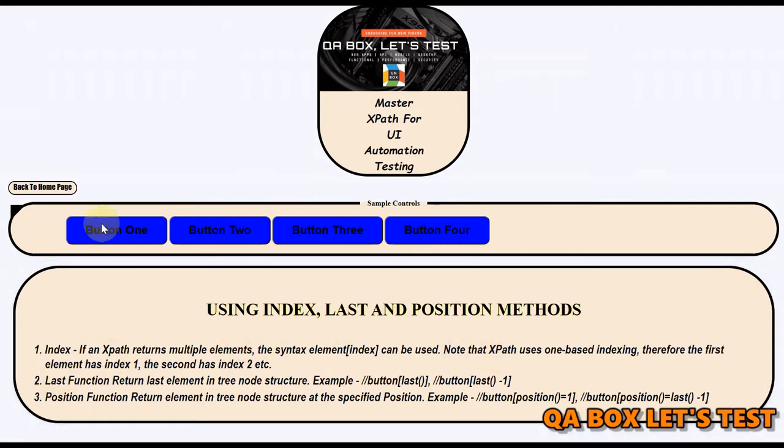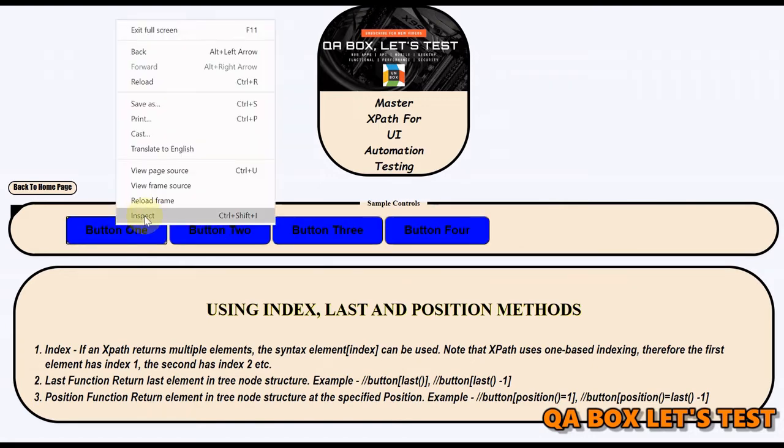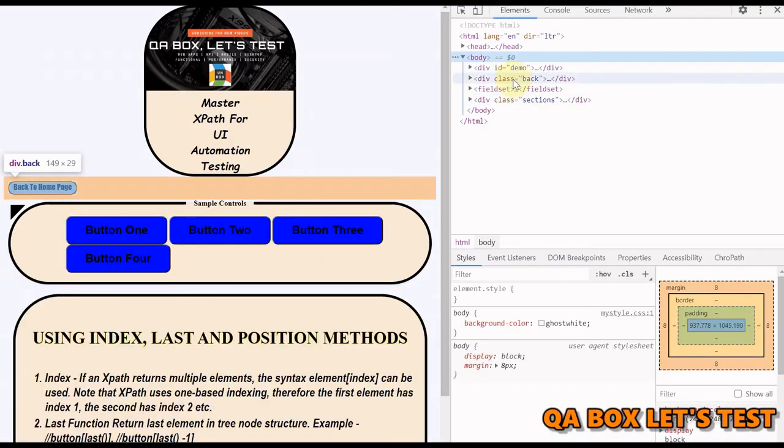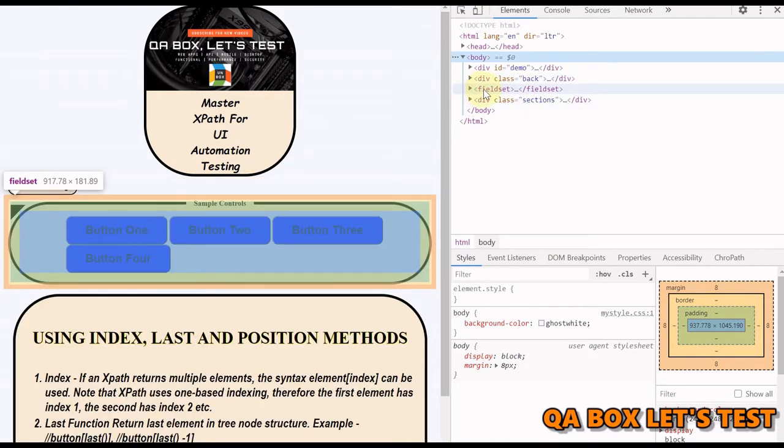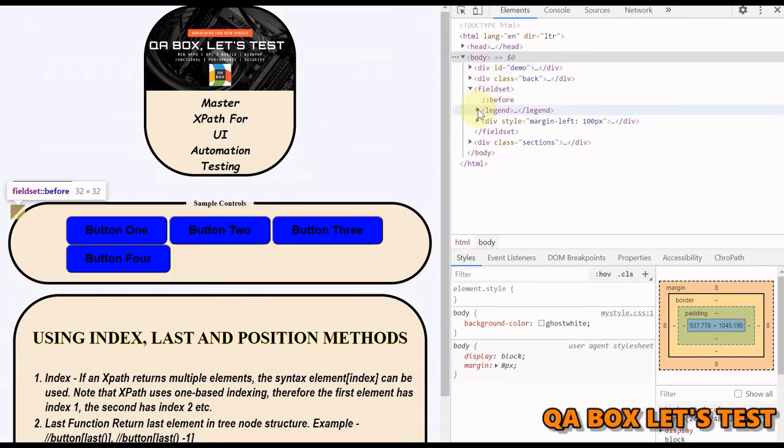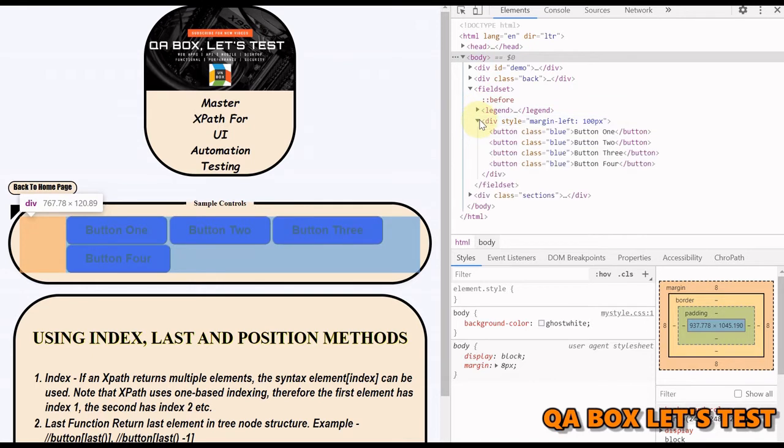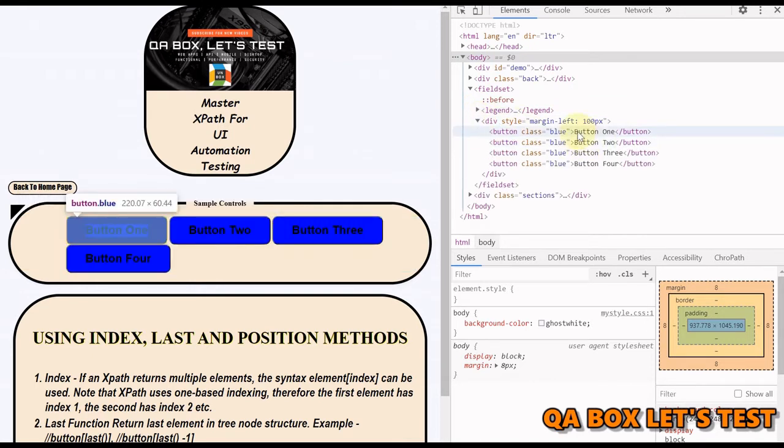Here you can see that in the sample control section there are four buttons, and we have to identify these buttons. Let us inspect these and see if we have any unique properties. They are available inside the fieldset, and inside this div if I expand this, the text only is different.